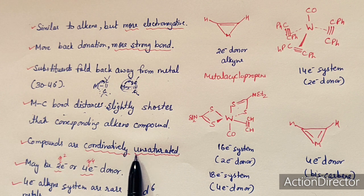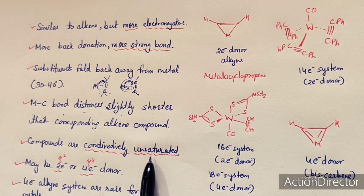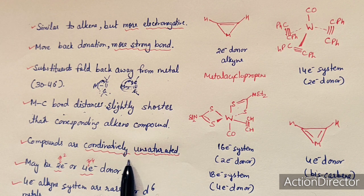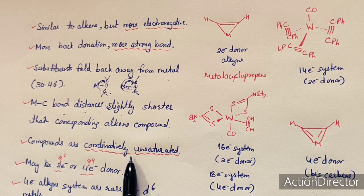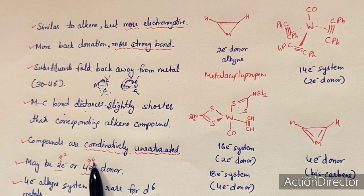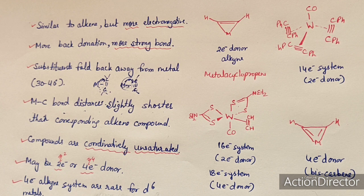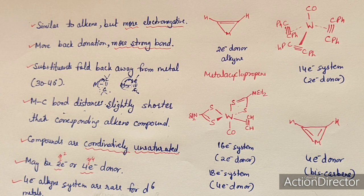Compounds of metal alkynes are generally coordinatively unsaturated, meaning they do not have an 18-electron system — generally less than 18 electrons. These coordinatively unsaturated compounds are synthesized using alkyne ligands. The alkyne may be a two-electron donor or a four-electron donor. If two-electron donor, it is represented as eta-2; if four-electron donor, as eta-4. Four-electron alkyne systems are rare, especially for d6 metals, because of repulsion between the filled metal d-pi orbital and the second alkyne C≡C pi bonding pair.